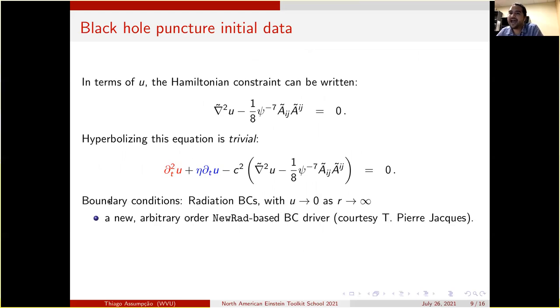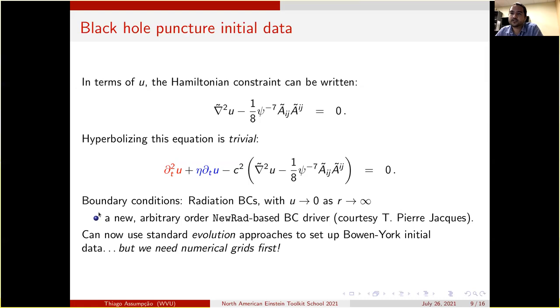We have implemented radiation boundary conditions, or Sommerfeld boundary conditions, to minimize reflections at the outer boundary. This particular driver was based on urad but implemented by my colleague Terence Pierre-Jacques, also using NRPy. So now that we have the equation and the boundary conditions, we can use our standard evolution approaches to set up Bowen-York initial data.